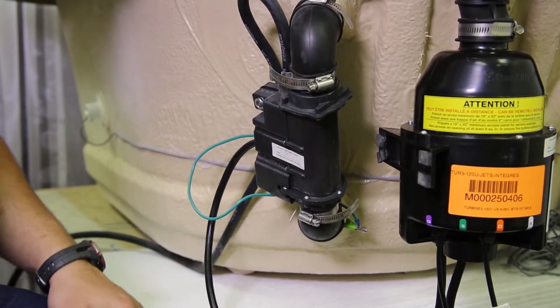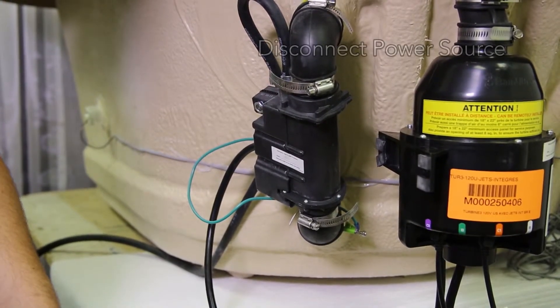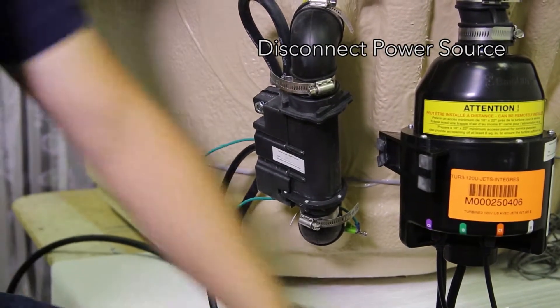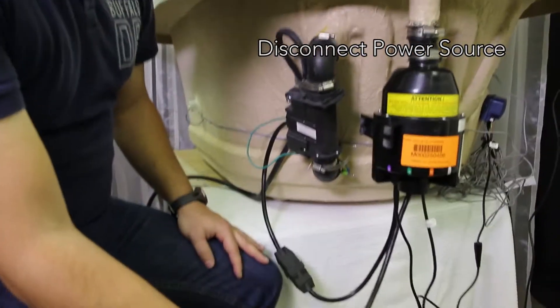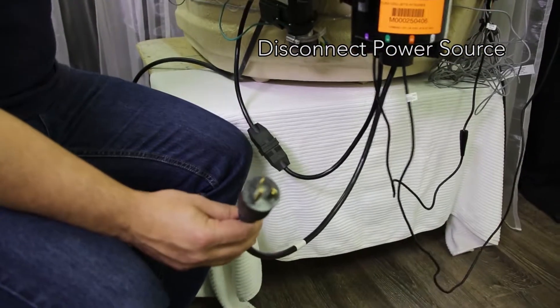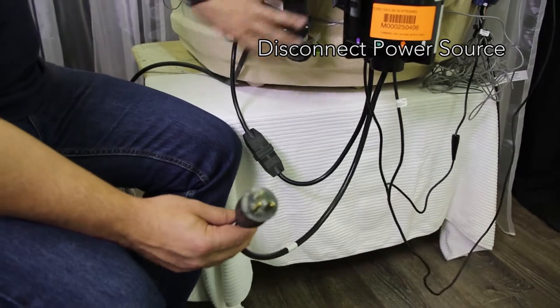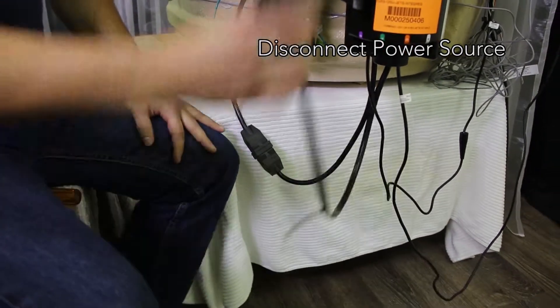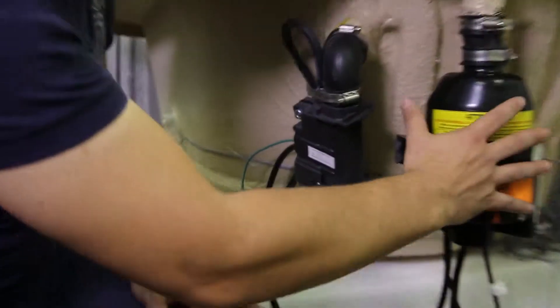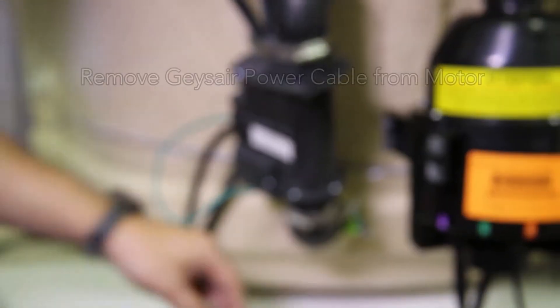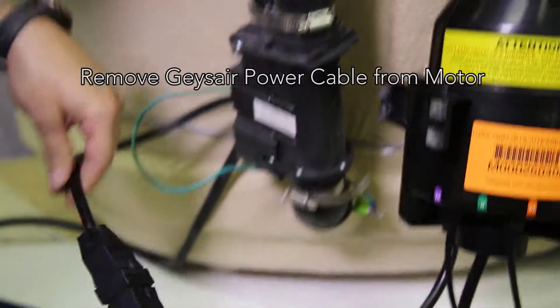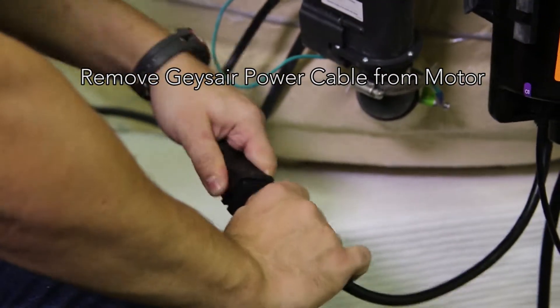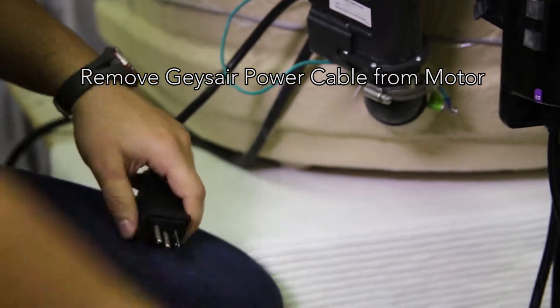So it's really simple. What you start with is turning your breaker off or unplugging. In this case we have a plug, so you unplug this power cable. The motor is the power source to the geyser. You don't have to touch the motor at all, you can leave it as is. This is the power cable for the geyser. You remove it, disconnect it like that.